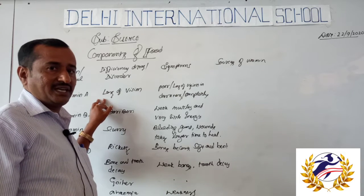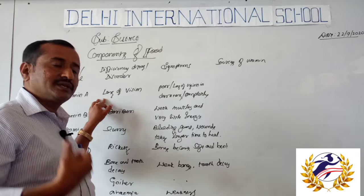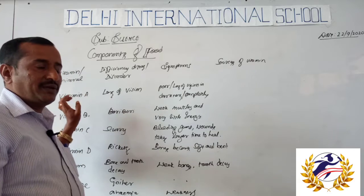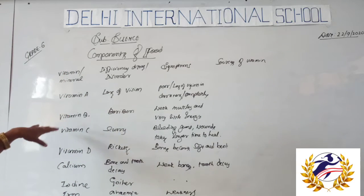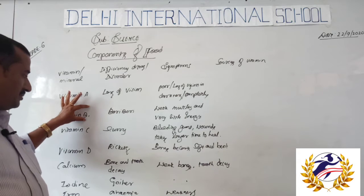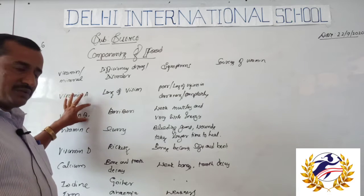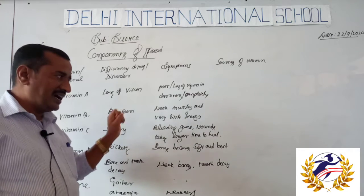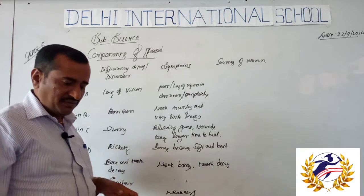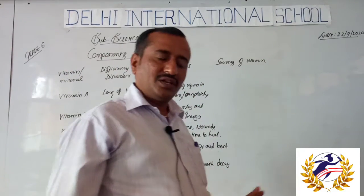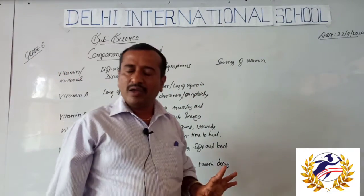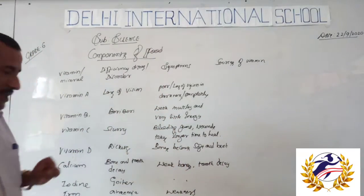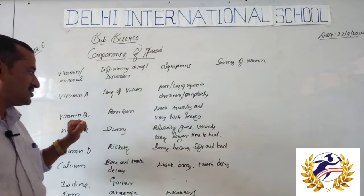Sometimes it causes difficulty seeing during the night time, and sometimes complete loss of vision — that is due to not eating food which consists of vitamin A. Vitamin B deficiency is called beriberi. It causes very weak muscles and very little energy. If a person does any minor work, they are not able to continue further work. That disorder is called beriberi.